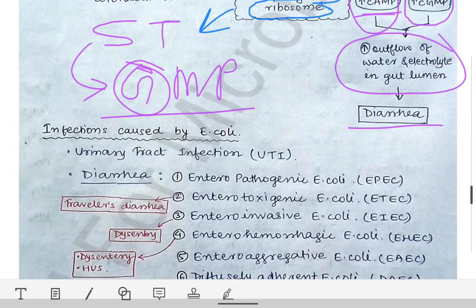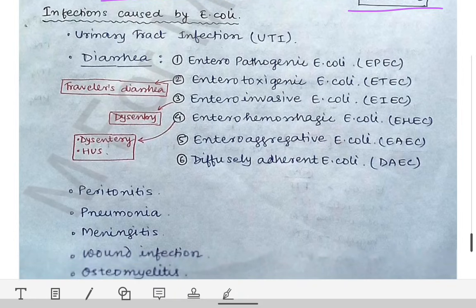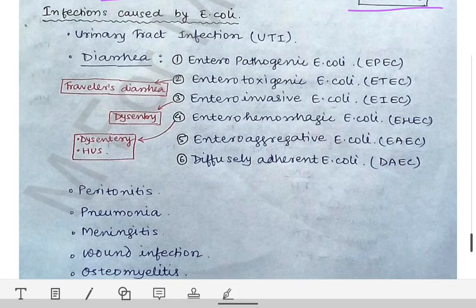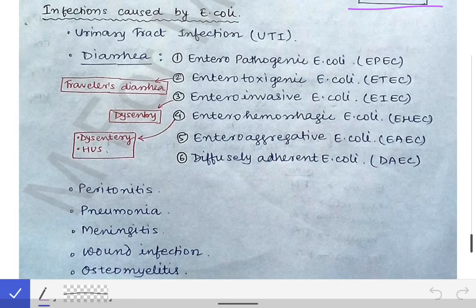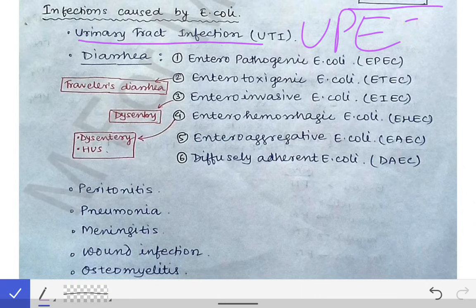Now let's talk about the infections caused by E. coli. The first infection is urinary tract infection (UTI), caused by uropathogenic E. coli (UPEC). Almost 70 to 80% of cases of UTI are caused by E. coli only. So about 70–80% of UTIs are caused by UPEC — uropathogenic E. coli.